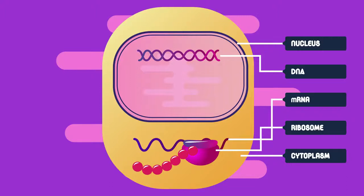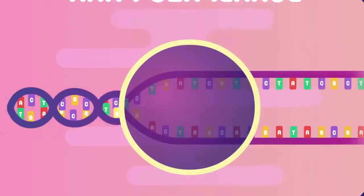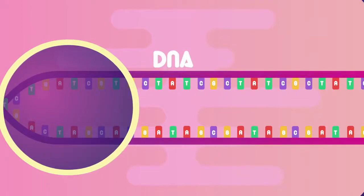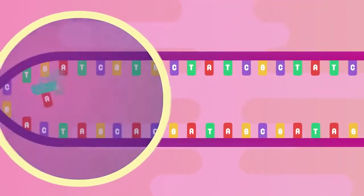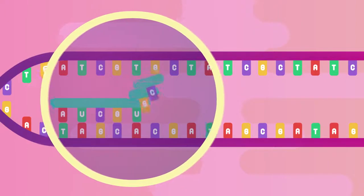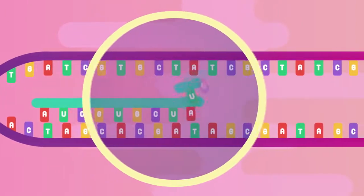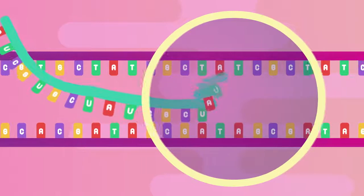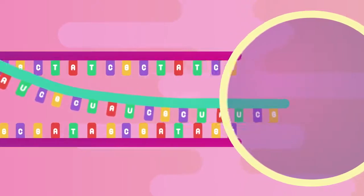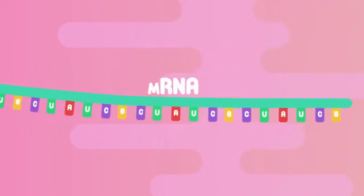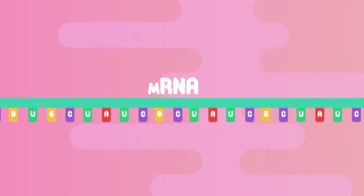In the nucleus, the enzyme RNA polymerase unwinds and unzips the two strands of DNA that contain the protein-making gene. Only one of these strands is going to be replicated. Complementary RNA nucleotides base pair with the chosen strand. RNA polymerase also then binds the RNA nucleotides together, making a new RNA strand called messenger RNA, or mRNA. This whole process inside the nucleus is called transcription.